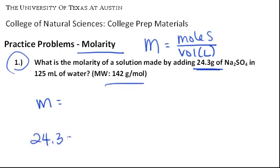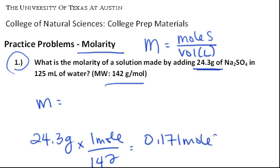So 24.3 grams, if you divide by molecular weight, gives you 0.171 moles. So molarity would be 0.171 over 0.125 liters,